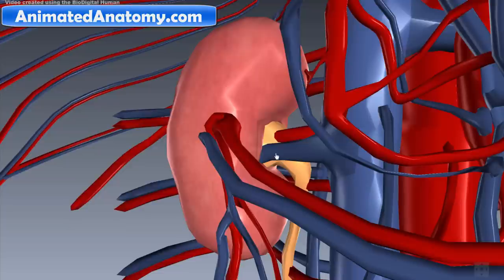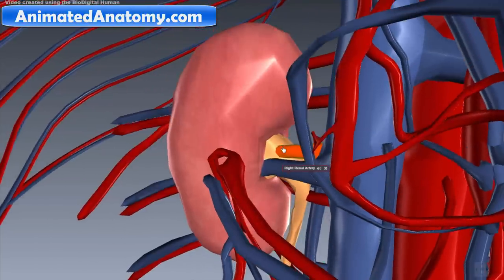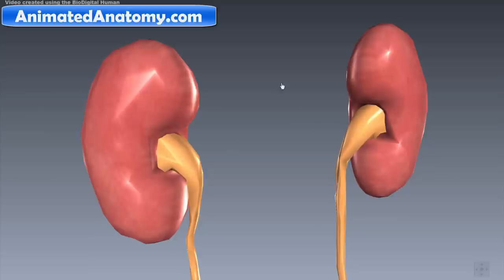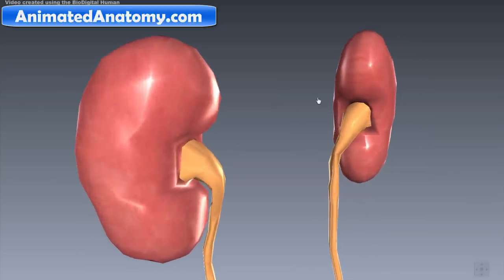Here you can see the renal vein and here you can see the renal artery entering the kidney. Both of the kidneys move downwards on the inhalation in the lungs.